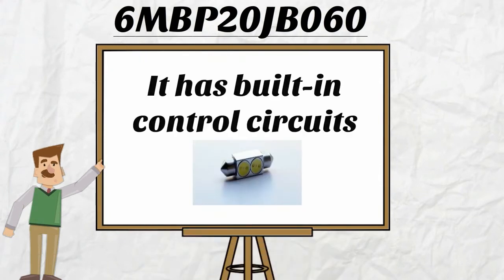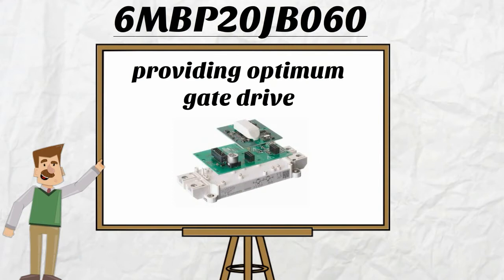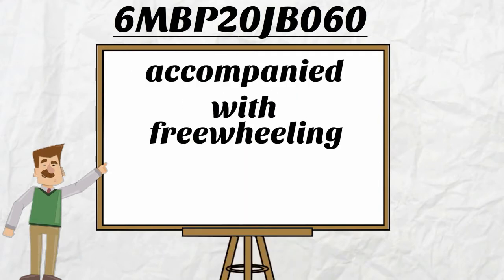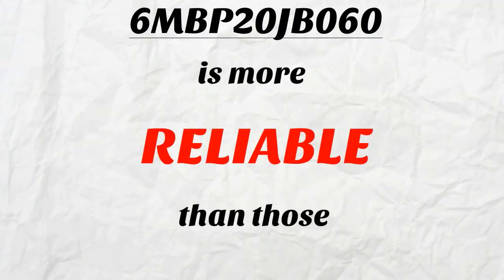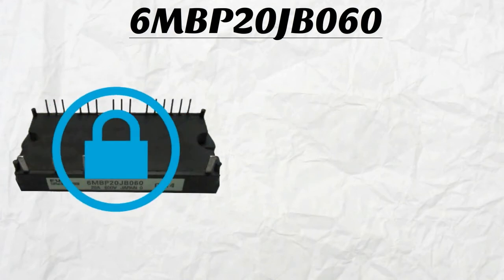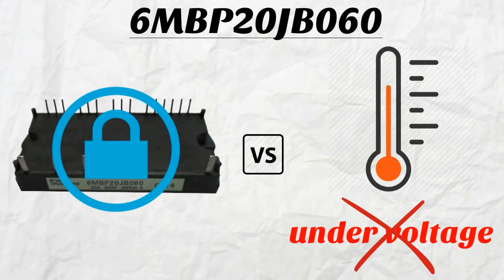It has built-in control circuits providing optimum gate drives accompanied with freewheeling diode power devices. 6MBP20JB060 is more reliable than typical modules due to the system's IPM. With this feature, the device is well protected against overheating and undervoltage.